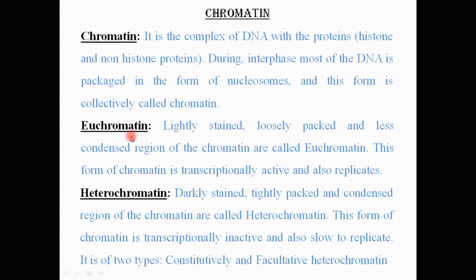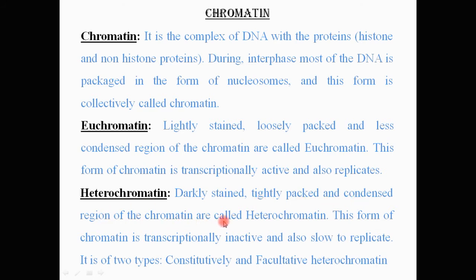Euchromatin is the lightly stained, loosely packed, and less condensed region of the chromatin. Whereas the darkly stained, tightly packed, and more condensed region of the chromatin is called heterochromatin.